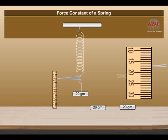3. Set the vertical wooden scale such that the tip of the pointer comes over the scale. 4. Note the reading of the position of the tip of the pointer on the scale. Record the reading in loading column against zero load.